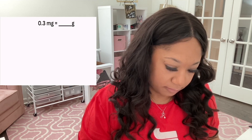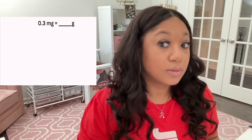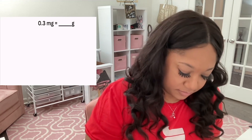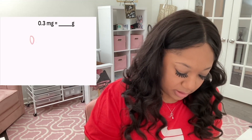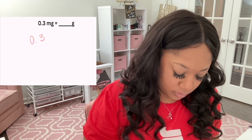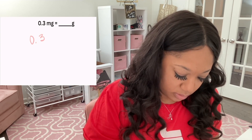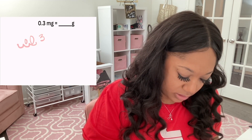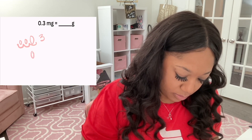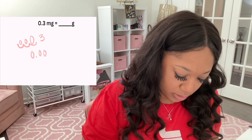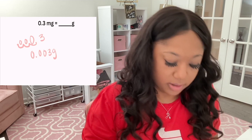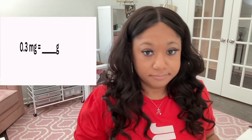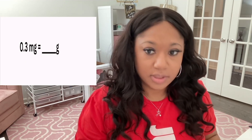Let's do another one: 0.3 milligrams equals how many grams? Going from small to large, go left. One, two, three — add your zeros — and you get 0.003 grams.